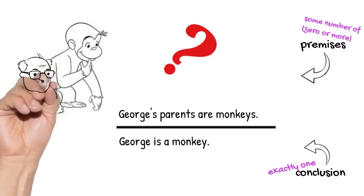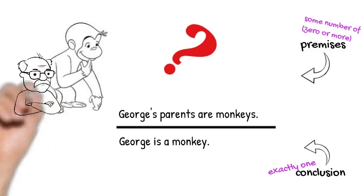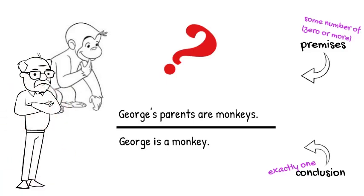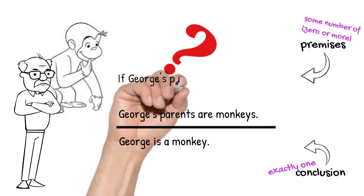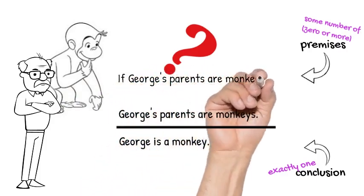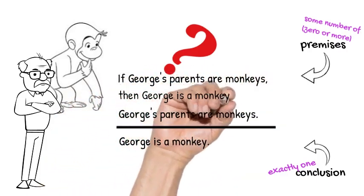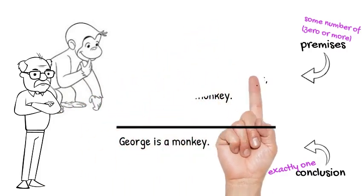But unfortunately, it's not enough to persuade my skeptical Uncle Larry. Uncle Larry's a skeptic, and he wonders whether monkeys are like lawyers. Many people have parents who are lawyers, but aren't lawyers themselves. So to convince my Uncle Larry, we're going to need to assume something else. We'll need to assume that if George's parents are monkeys, then George is a monkey. Now our argument has two premises.